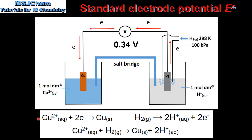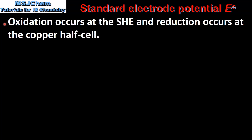Here we have the half equations for the reactions in each half cell. In the copper half cell, copper ions are reduced to form copper metal. In the standard hydrogen electrode, hydrogen gas is oxidized to form hydrogen ions. Here we can see the net ionic equation for the reaction. Oxidation occurs at the standard hydrogen electrode and reduction occurs at the copper half cell.